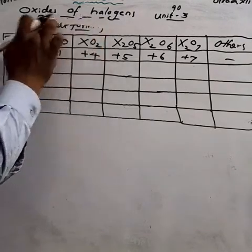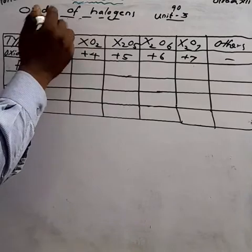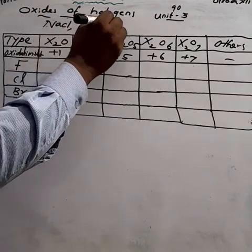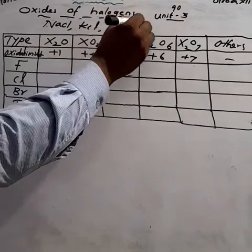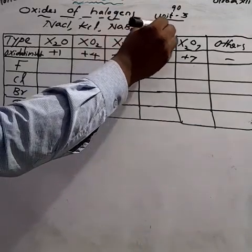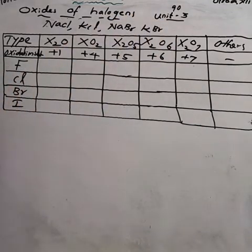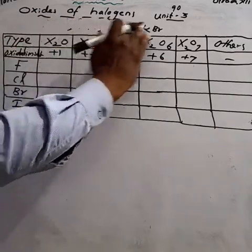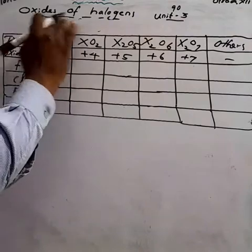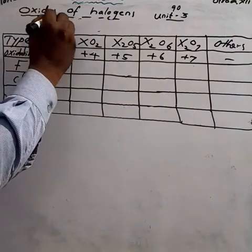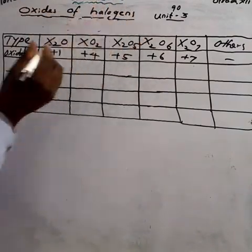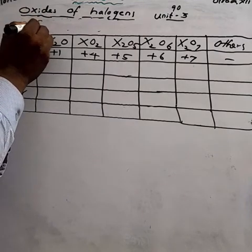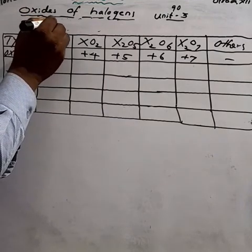Halogens are involved in salt forming. For example, sodium chloride, potassium chloride, sodium bromide, potassium bromide, sodium iodide — these are all salts, formed by an alkali element combined with a halogen. Now we are learning about the oxides of halogen: one of the halogens combines with oxygen to form oxides of halogen.